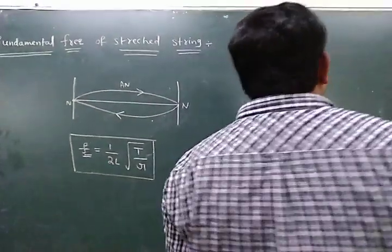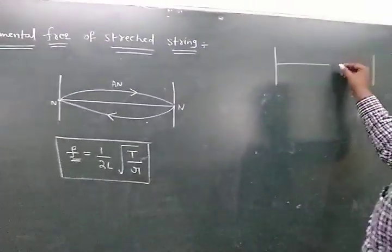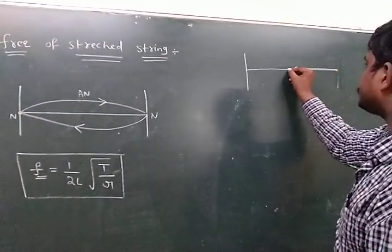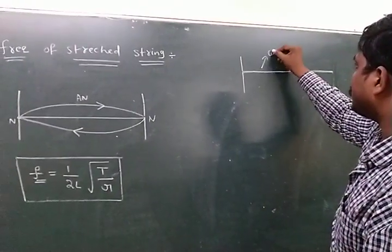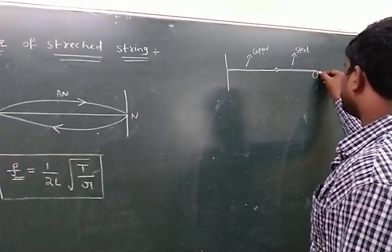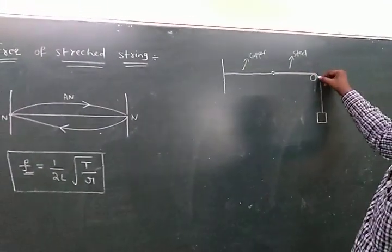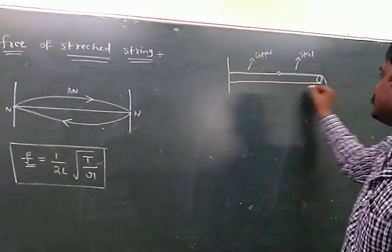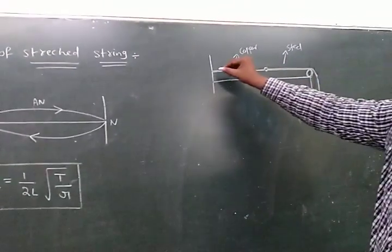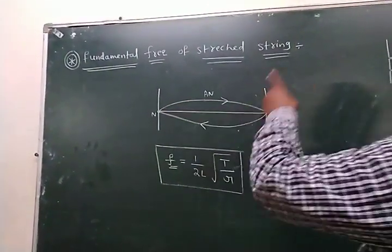This is the most important topic. Here we have fixed supports. I take two wires — one wire is made of copper, the other wire is made of steel. Both wires are given the same load using a pulley. This is the steel wire and this is the copper wire.